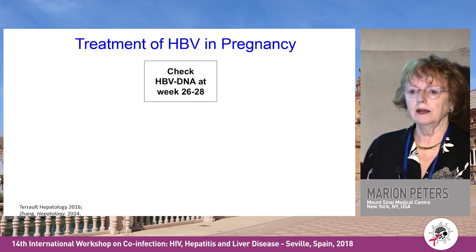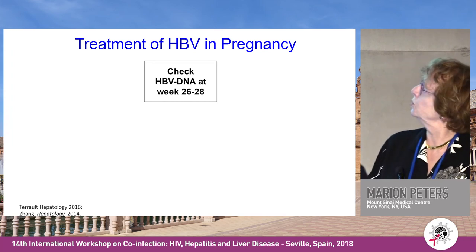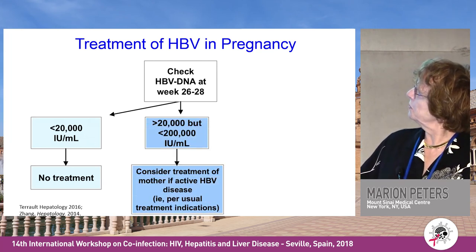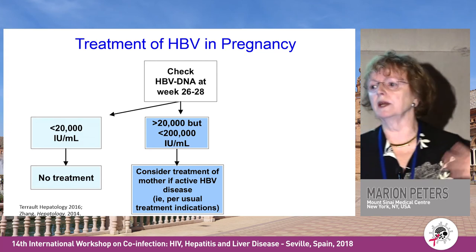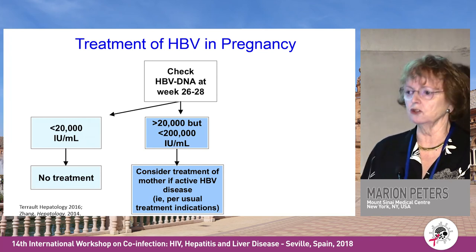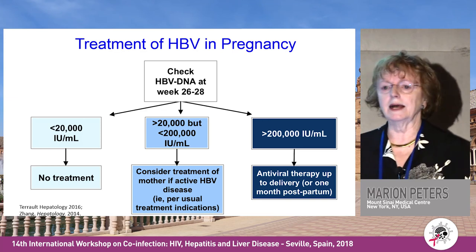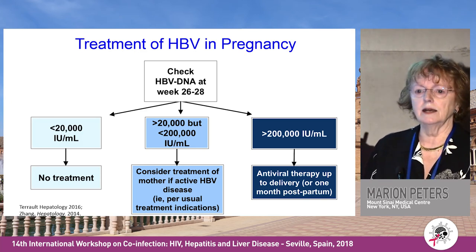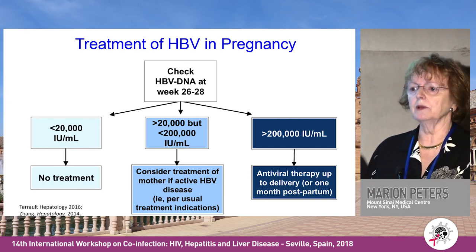In pregnancy, for mono-infected patients, check HBV DNA at 26 to 28 weeks. If it's less than 20,000 international units, no treatment. If between 20,000 and 200,000, consider whether the mother needs treatment — many young women prefer to wait until after childbearing, but if they have significant fibrosis or cirrhosis they must be on treatment for themselves. If greater than 200,000, give antiviral therapy in the last trimester to prevent mother-to-child transmission; the antiviral must be tenofovir. Telbivudine and lamivudine are okay but carry a risk of resistance.